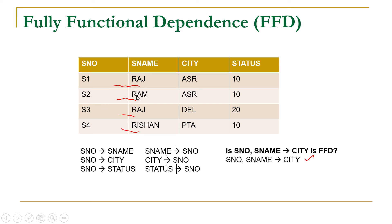For S2 and Ram, which is unique in this dataset, we have Amritsar. For S3 and Raj, which is unique, we have Delhi. For S4 and Rishan, we have Patiala. So from this dataset we can clearly see that the combination of S number and S name is also unique — it is a super key — and for this super key we have only one value of city. So this is a case of functional dependence.